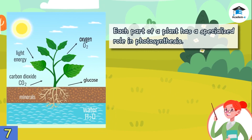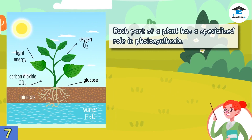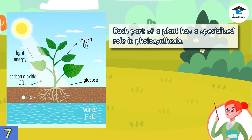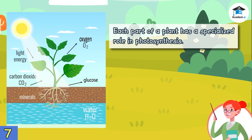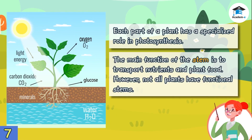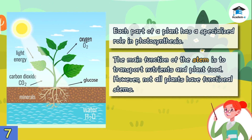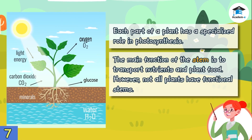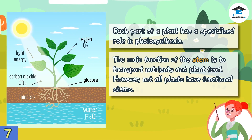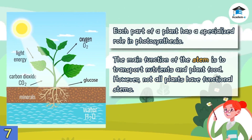Each part of a plant has a specialized role in photosynthesis. The roots collect water, while the leaves collect light energy, carbon dioxide, and some amount of water. The leaves also create the food of the plant. But how do plants bring water from the roots to the leaves, and how do plants bring food from the leaves to other parts? It is through the stem — the main function of the stem is to transport nutrients and plant food. However, not all plants have functional stems.